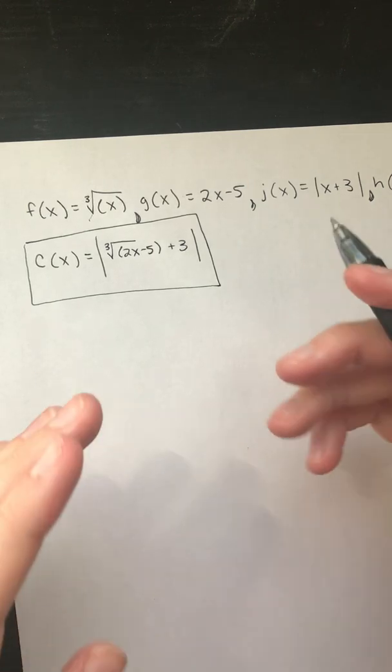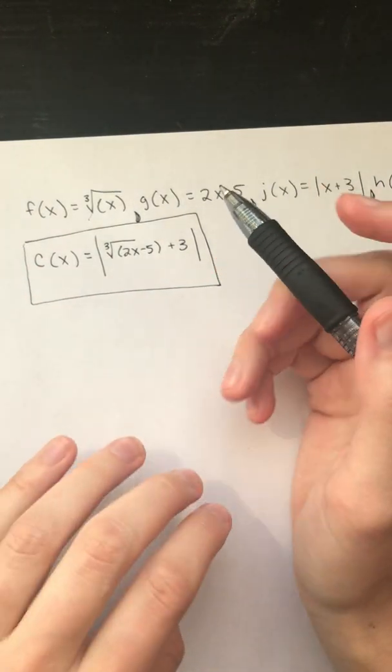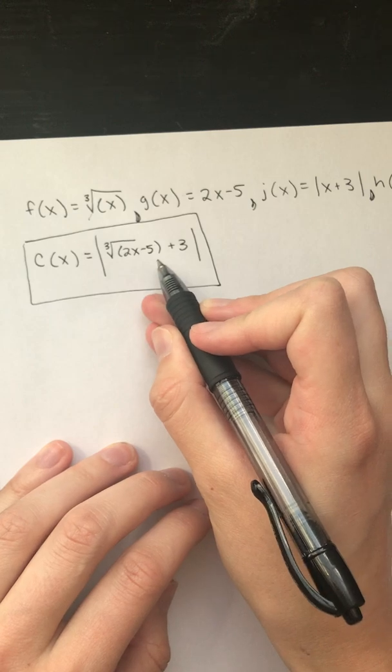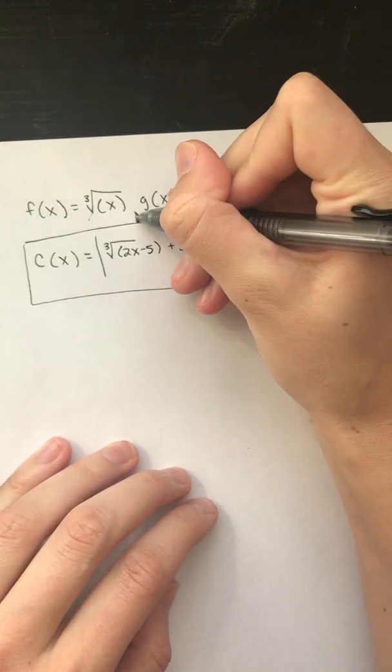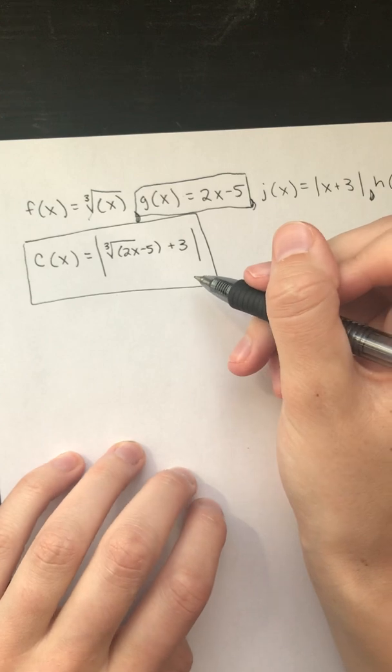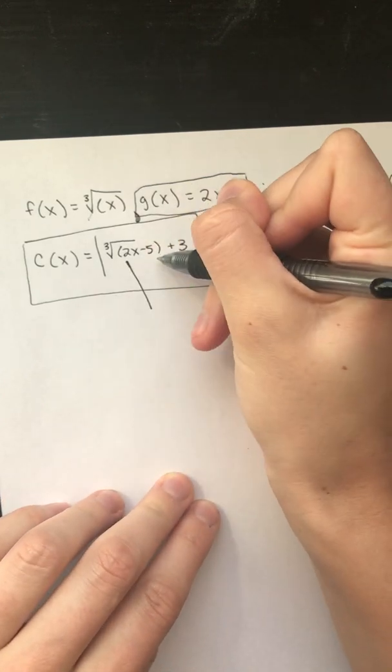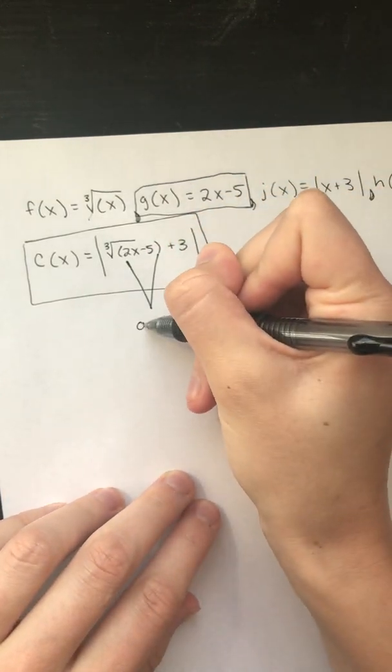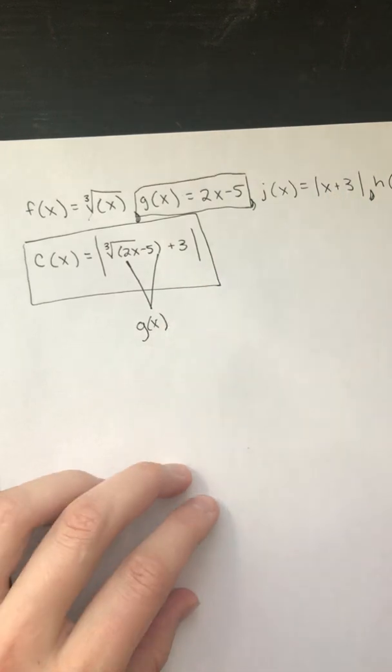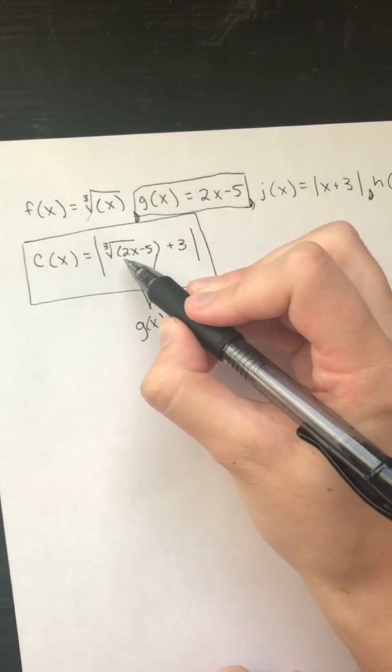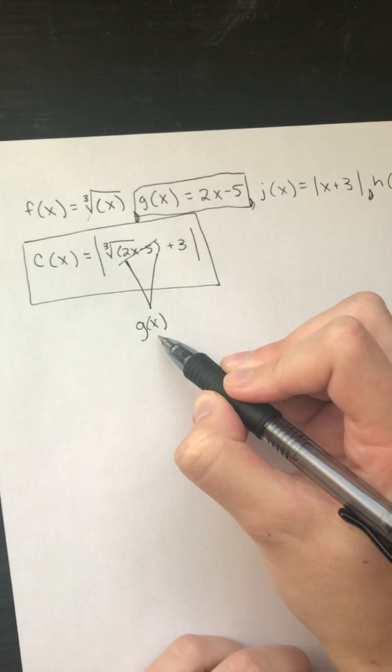The first thing I'm seeing is something that's deep inside all the parentheses is this 2x minus 5 and I know that that is what g of x is. So I can simplify this to just a g of x.